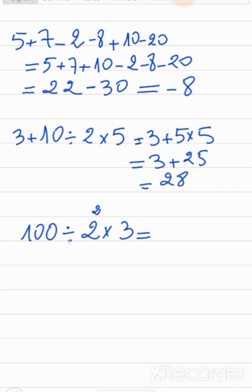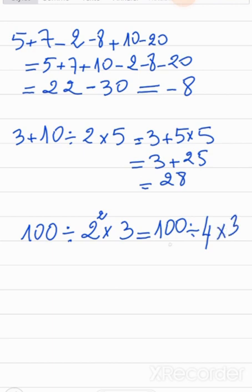Here I have division, exponent, and multiplication. The exponent is the strongest, so I calculate that first: 100 divided by 2 squared, which is 4, times 3. Now I have only division and multiplication, so I go left to right: 100 divided by 4 is 25, times 3 is 75.